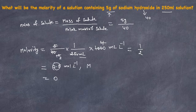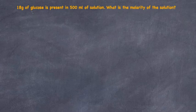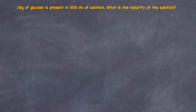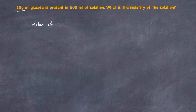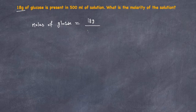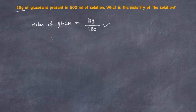Let's do another example: 18 grams of glucose in 500 milliliters of solution — find the molarity. Again, we're given mass not moles, so first we find moles of glucose: moles equals mass of solute (18 grams) divided by molar mass of solute. The molar mass of glucose is 180, so moles of glucose equals 18 over 180.